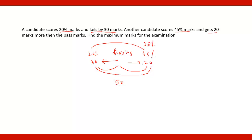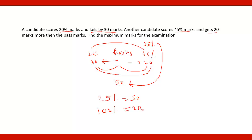The difference between the two marks is 50 and the difference between the two percentages is 25. Therefore, 25 percent equals 50. So 100 percent will be 4 times that, which is 200. So the maximum marks for the examination is 200. Again, we have not used any formula.